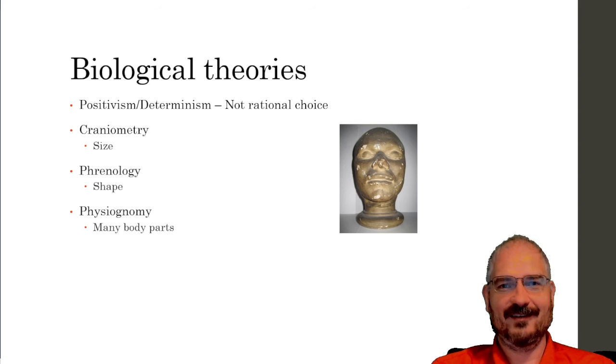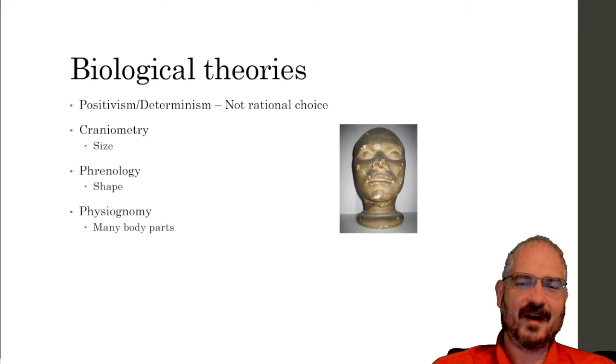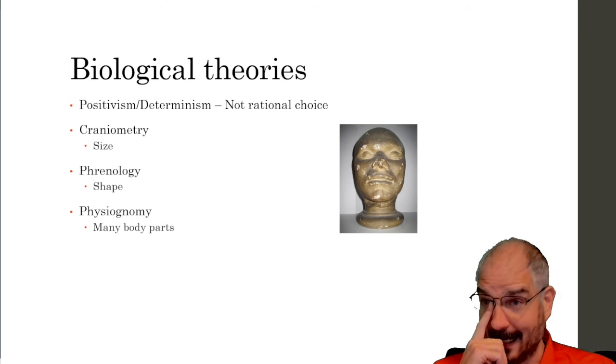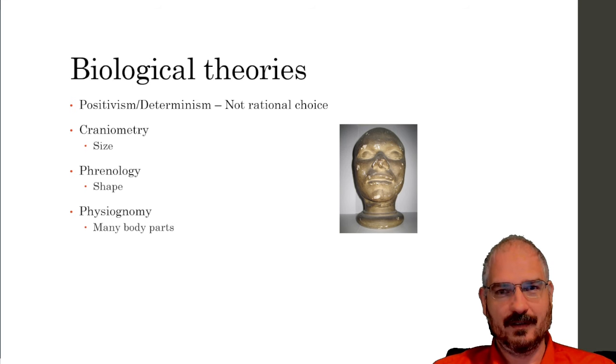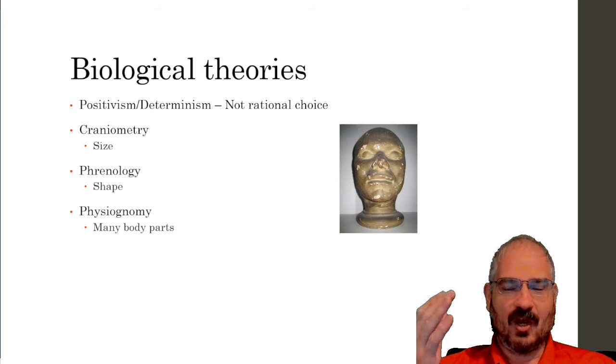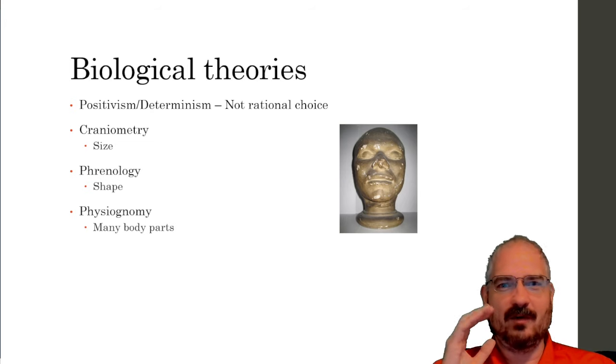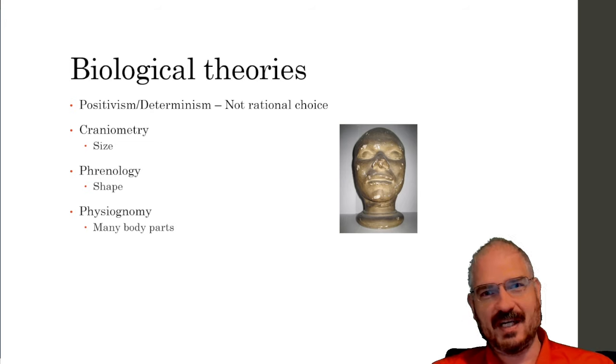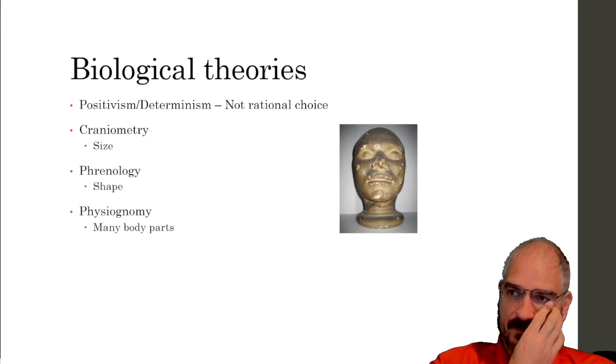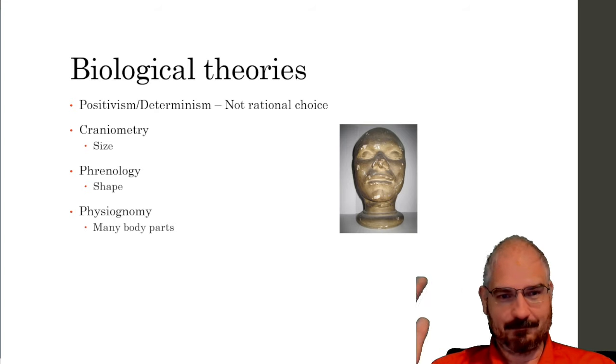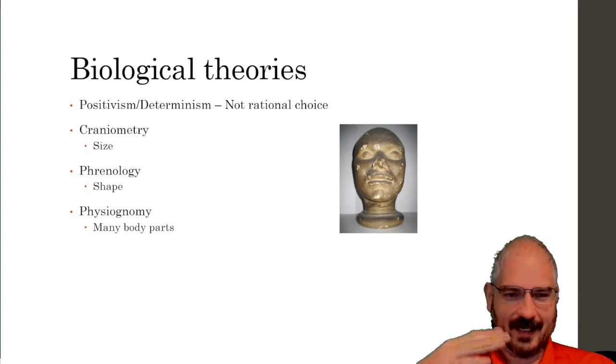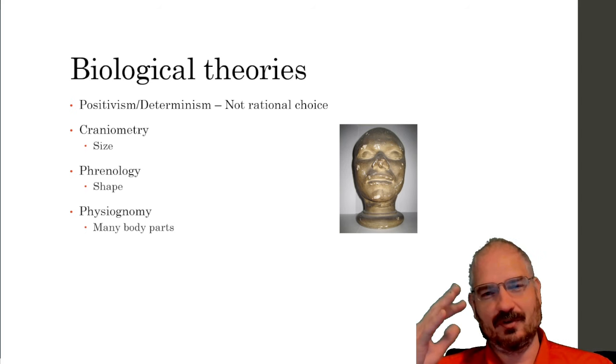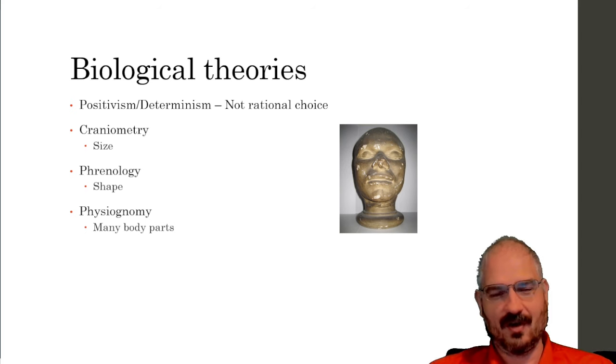This was pretty quickly rejected because the early craniometry supporters, after they passed away, were found to have brain sizes actually smaller than average in a lot of cases. This morphed into phrenology. Phrenology was less about brain size and more about brain shape—whether there were bumps here or there in different parts of the brain, whether you had a larger occipital lobe versus temporal lobe versus parietal lobes.